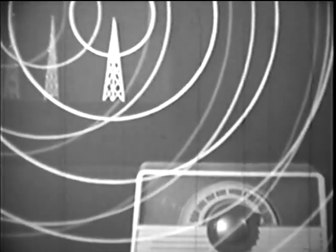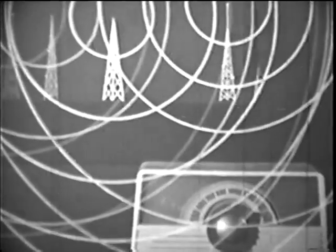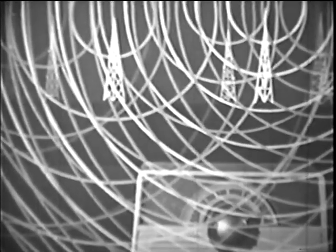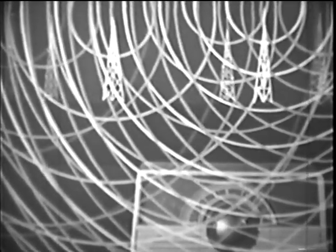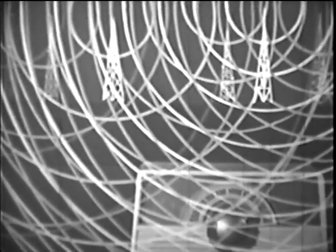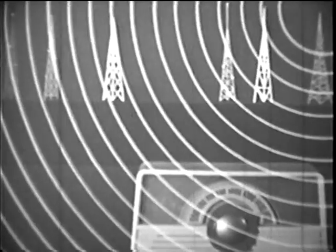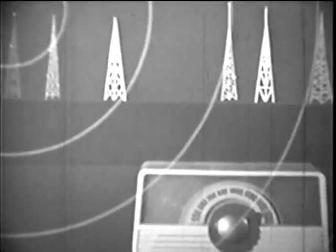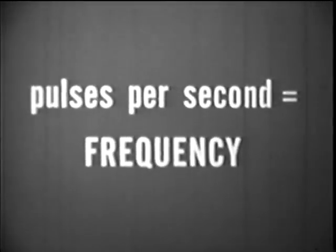Electromagnetic energy traveling through space is the basis of radio broadcasting. But there are many radio transmitters. How can these radio waves be separated? Each station transmits a different number of pulses per second. The number of pulses per second is called the frequency.